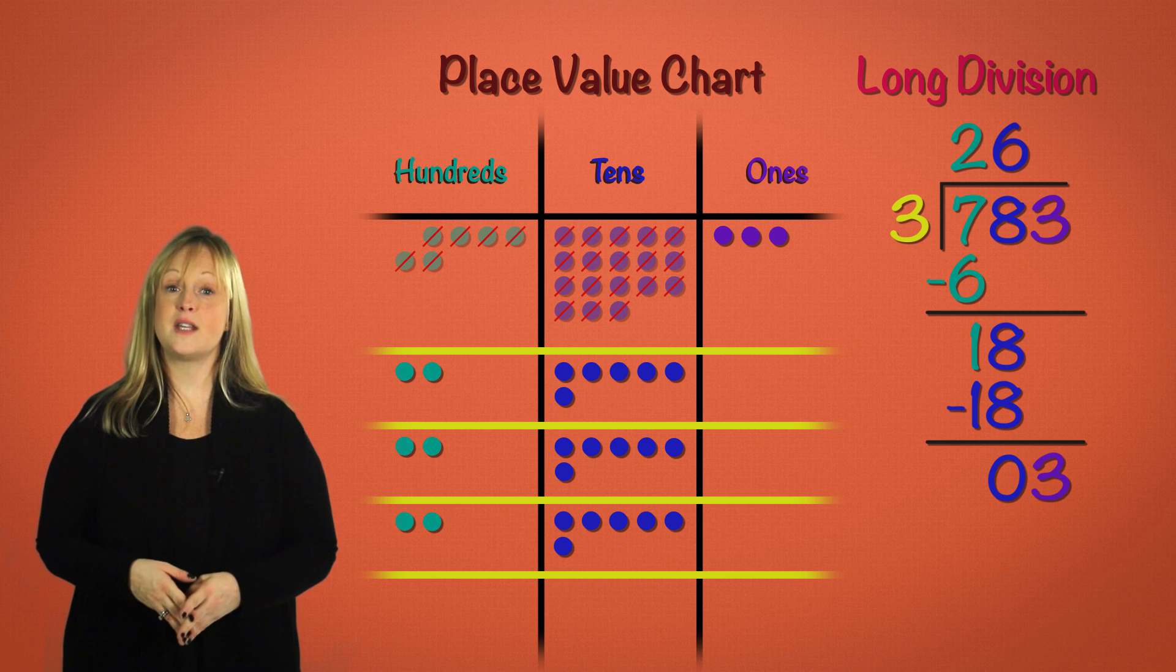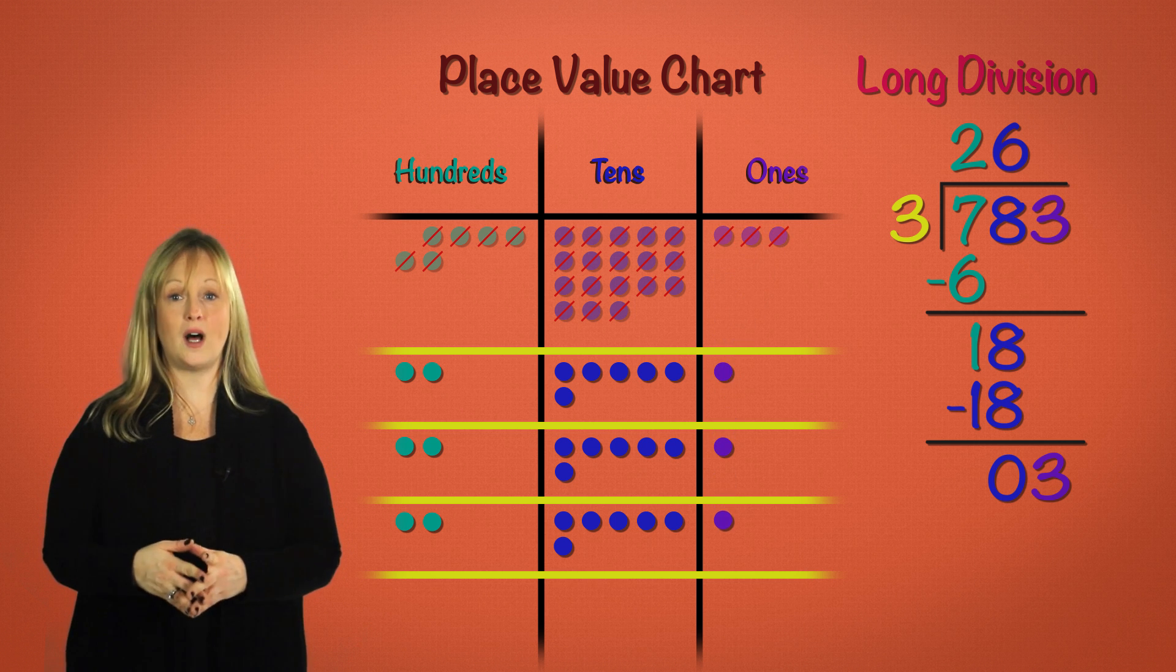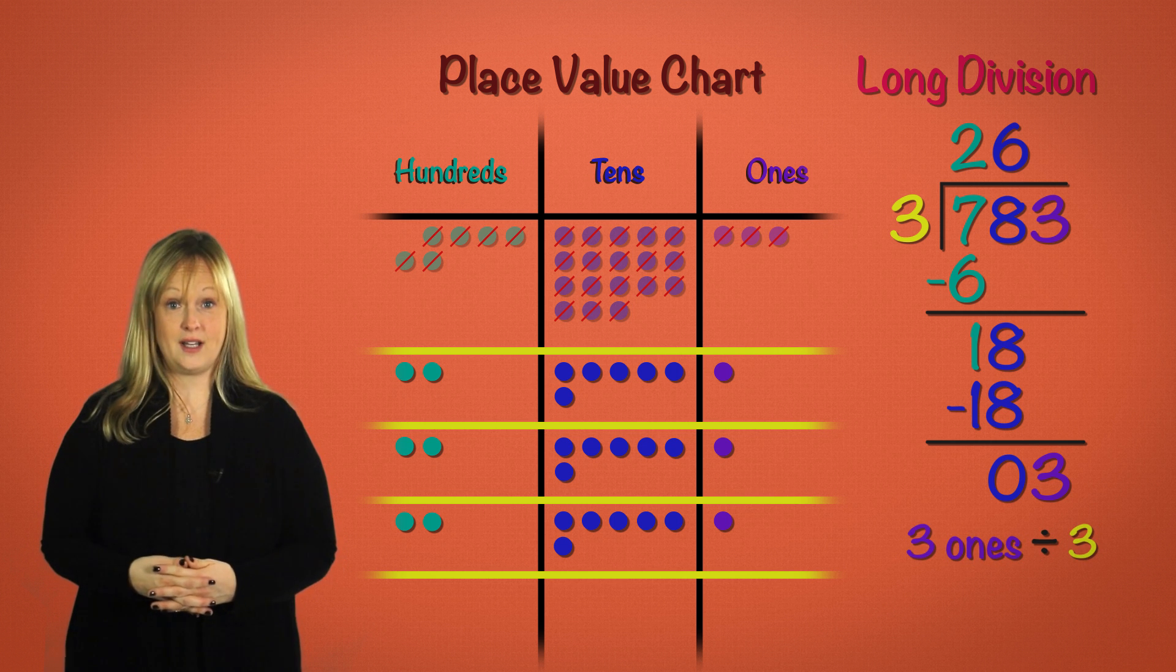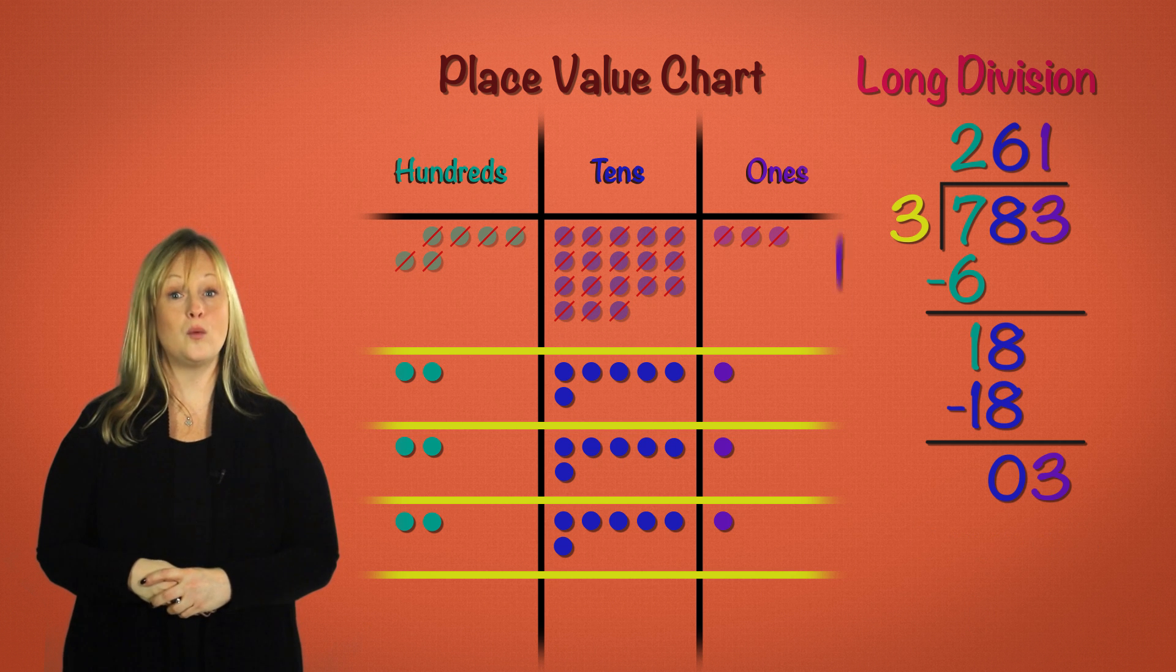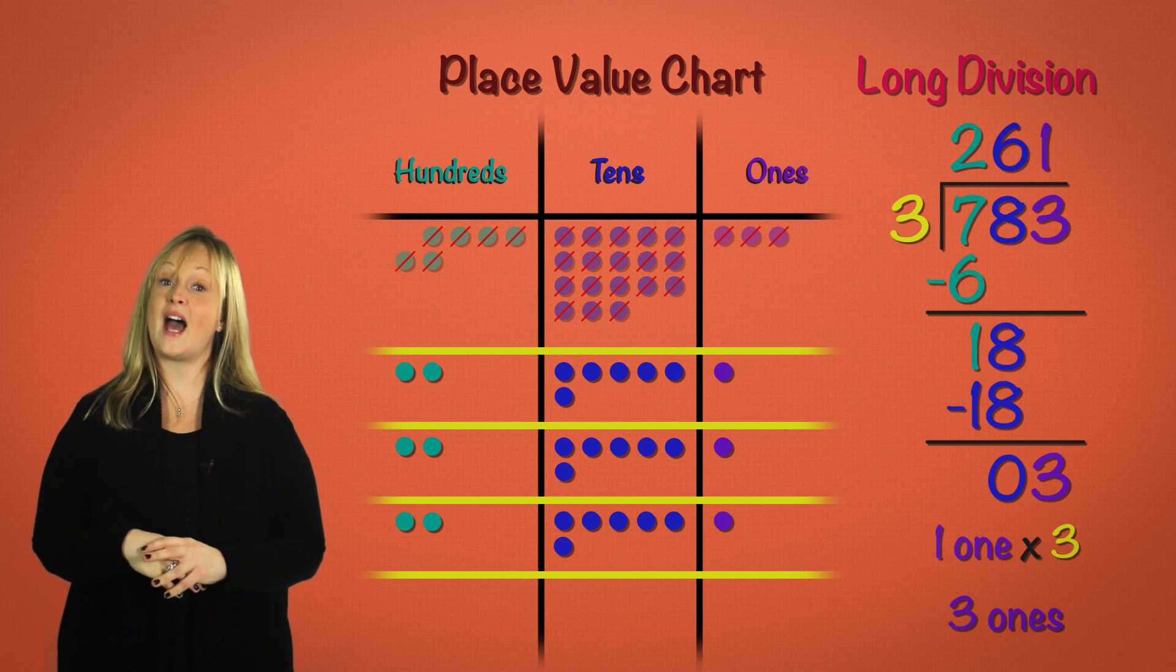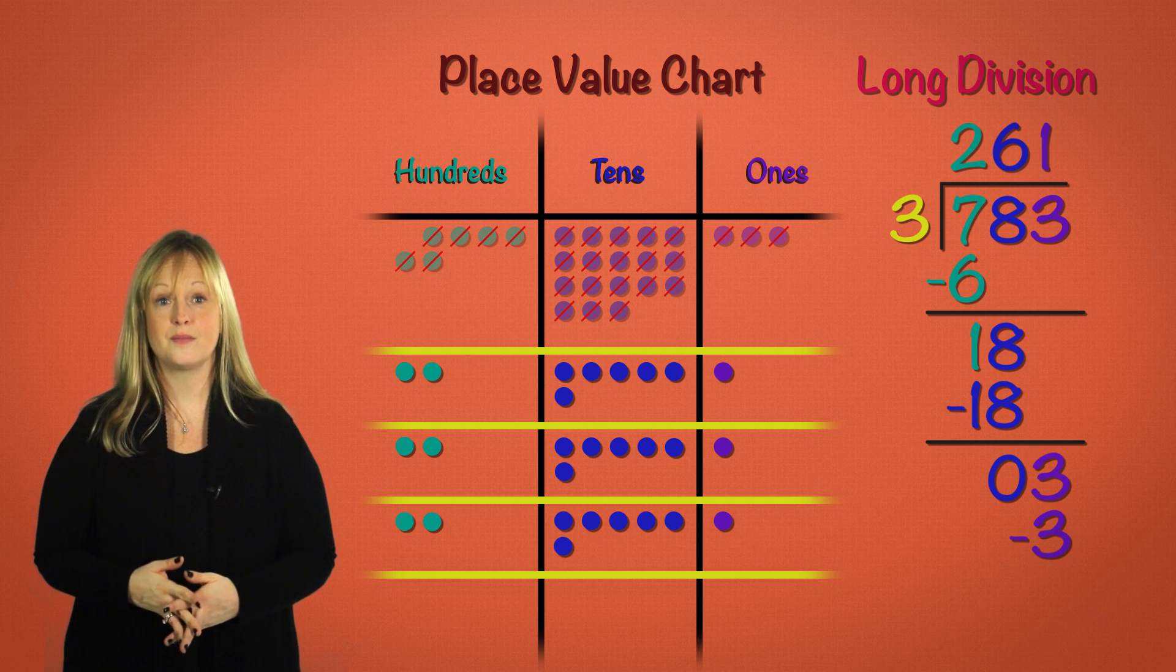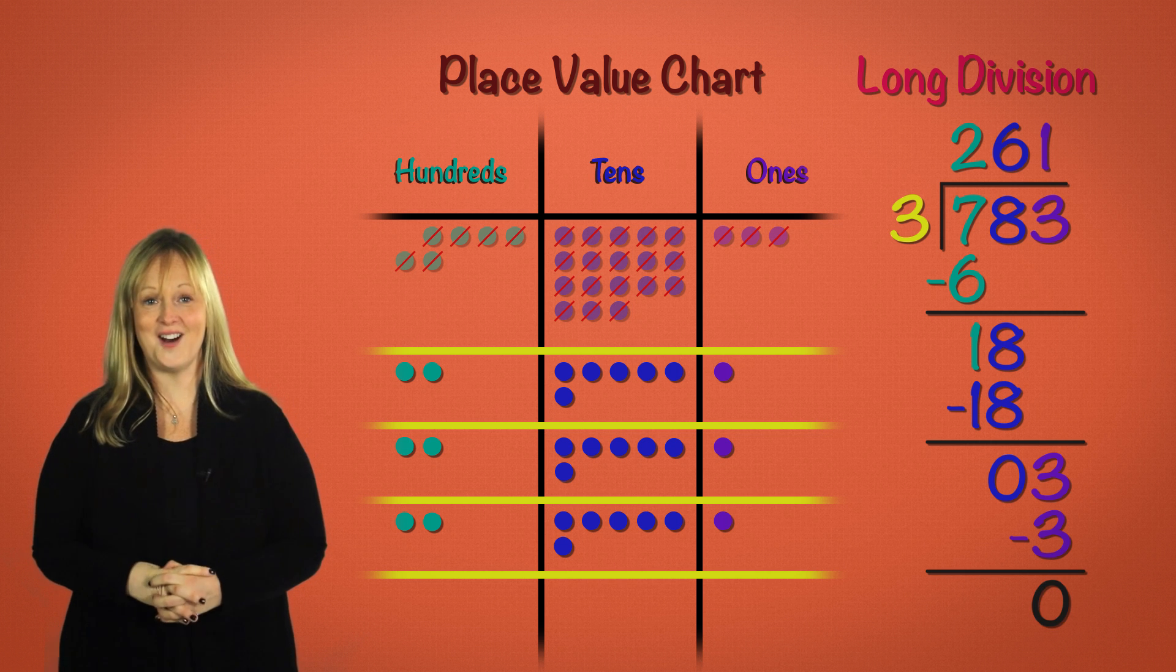We have three ones, and we want to divide by three. Which gives us one one in each group. Three ones divided by three is one one. We recorded one one three times, and that gave us three. So we had three ones, and we distributed three ones. So three ones minus three ones equals zero. That checks out.